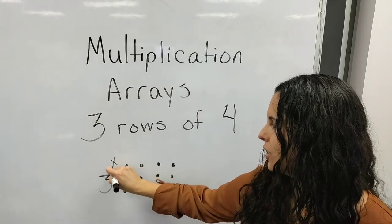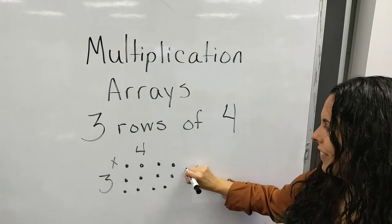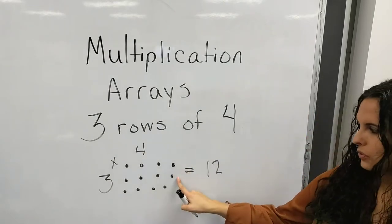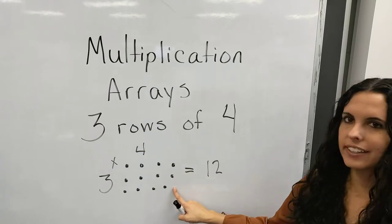So that's three times four and that gives us twelve. Four plus four is eight plus four more is twelve.